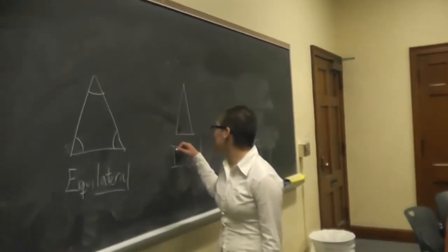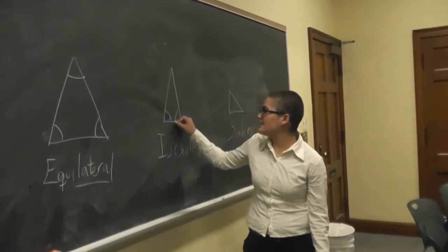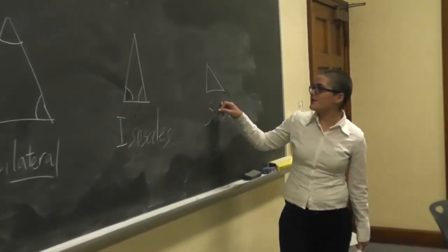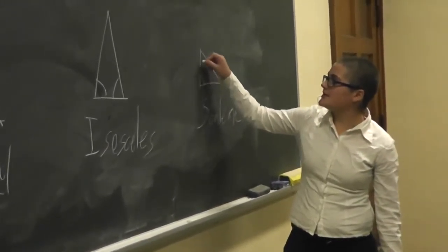Yeah, that's exactly right. So in an equilateral triangle, all of the angles are the same. And in an isosceles triangle, two are the same. And in a scalene triangle, all of the angles are completely different.